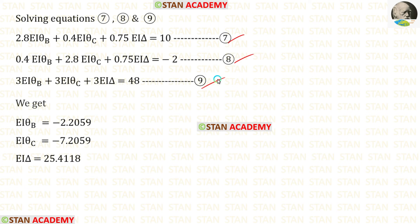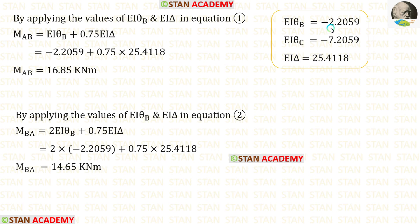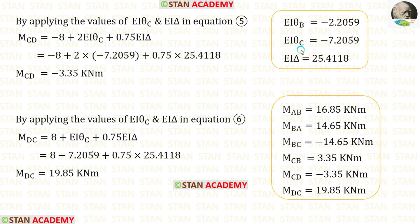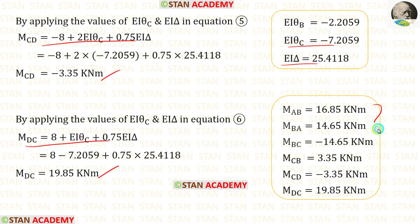Let us take a calculator and solve these three equations. If you do not know how to solve three equations using a calculator, see the description below — there is a link you can click to watch that video. Using the calculator, I have obtained the values of EI·theta B, EI·theta C, and EI·delta. Applying the values of EI·theta B and EI·delta in equations 3 and 4, we get M_BA and M_CB. Applying the values of EI·theta C and EI·delta in equations 5 and 6, we get M_CD and M_DC. We have now calculated all of the moments.